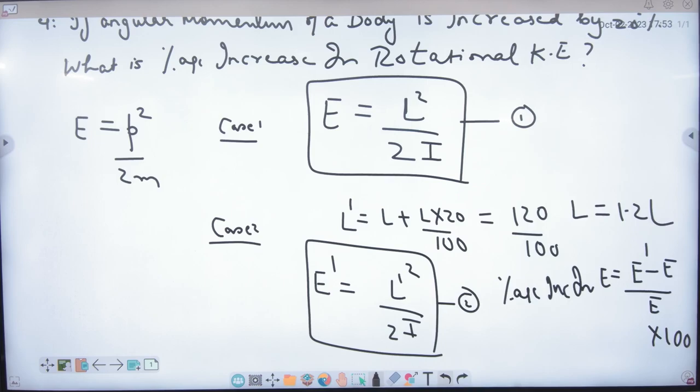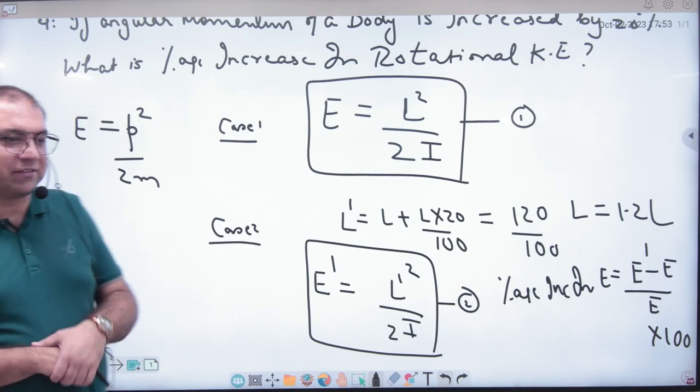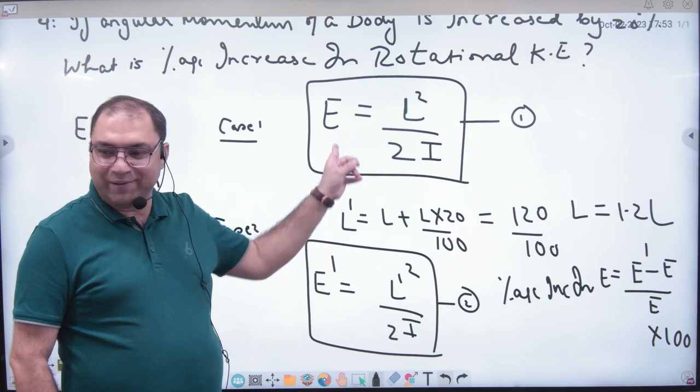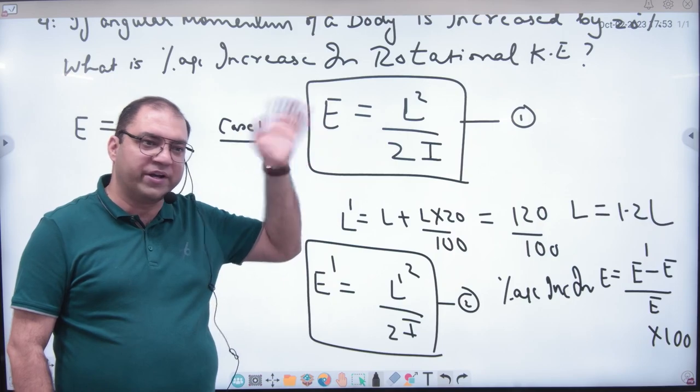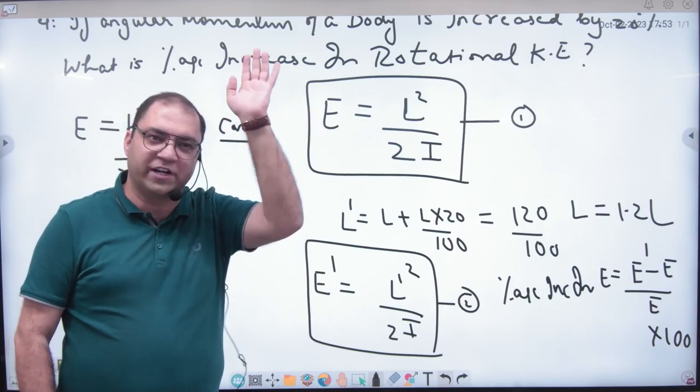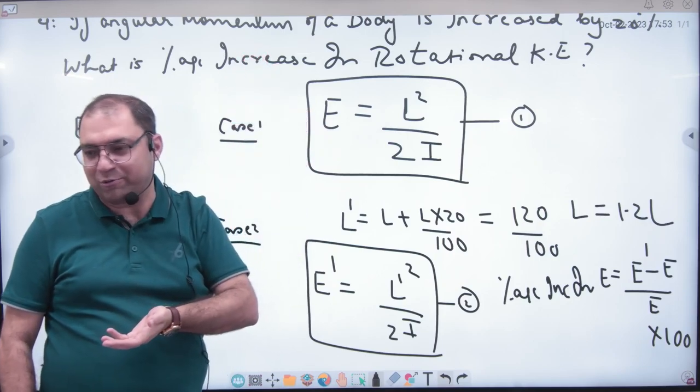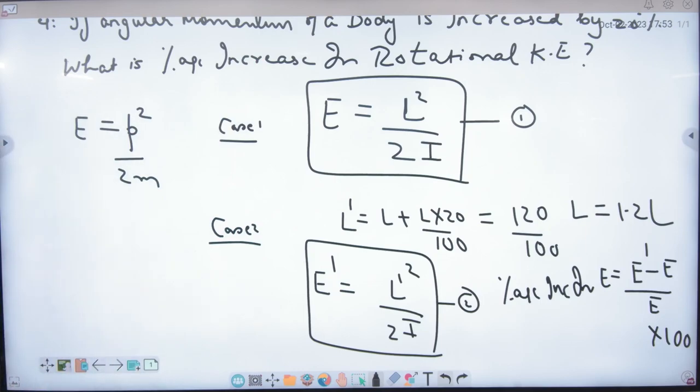44%. I remember it from linear motion. The answer is 40%, so I thought I had a shortcut. Delta E by E is 2 into delta L by L. Delta L by L percent is 20. 20 into 2 is 40. So the answer is 40%.